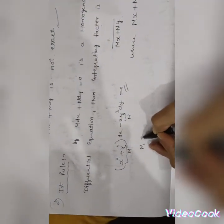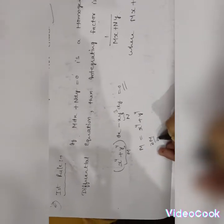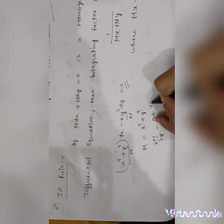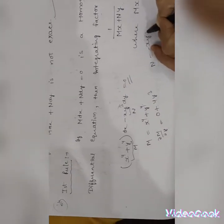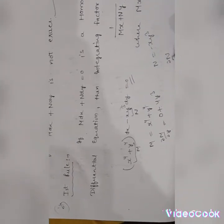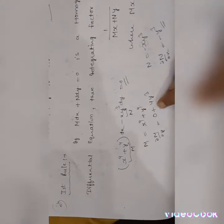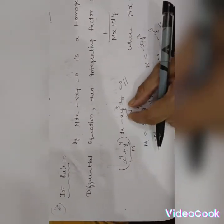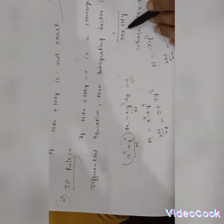We write M = x⁴ + y⁴, then compute ∂M/∂y: the derivative of x⁴ is 0 and of y⁴ is 4y³. For N = –x·y³, compute ∂N/∂x: the derivative with respect to x gives –y³. Since ∂M/∂y ≠ ∂N/∂x, the equation is not exact. By the first rule, since it is a homogeneous differential equation, the integrating factor is 1/(Mx + Ny).